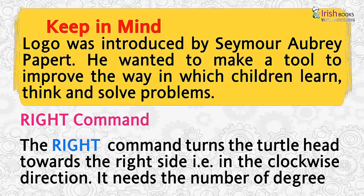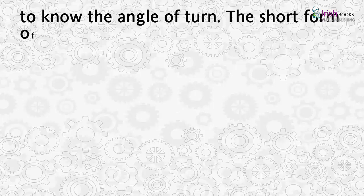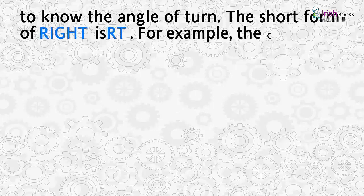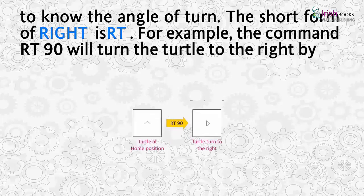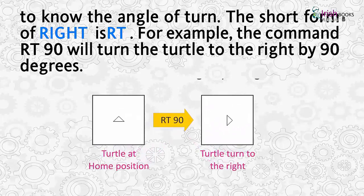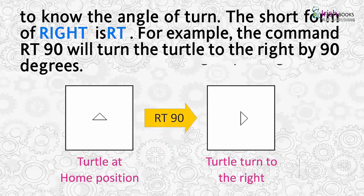The right command turns the turtle head towards the right side, i.e., in the clockwise direction. It needs the number of degrees to know the angle of turn. The short form of right is RT. For example, the command RT 90 will turn the turtle to the right by 90 degrees.